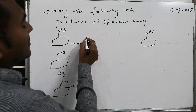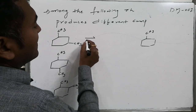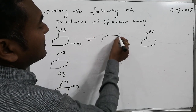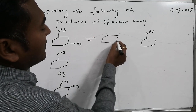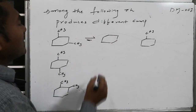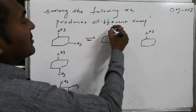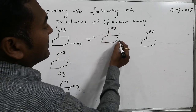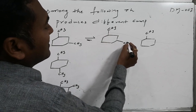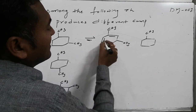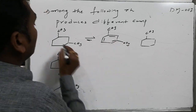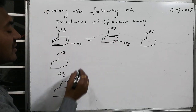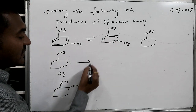As we know, meta-dimethylbenzene is present in equilibrium with another Kekulé structure — also meta-dimethylbenzene — where the double bonds are arranged alternately in the ring.